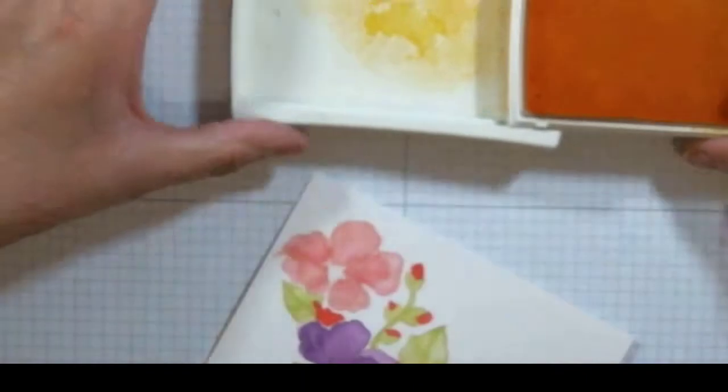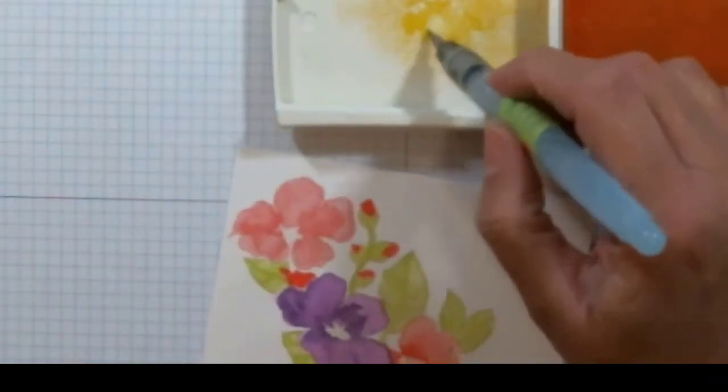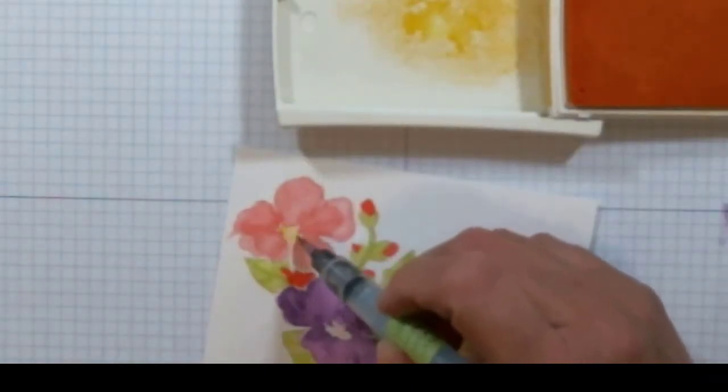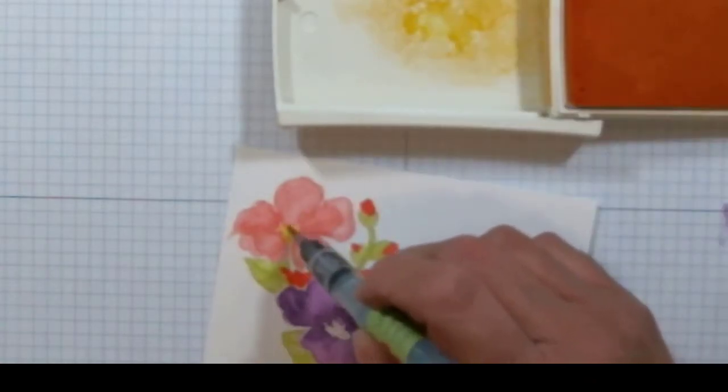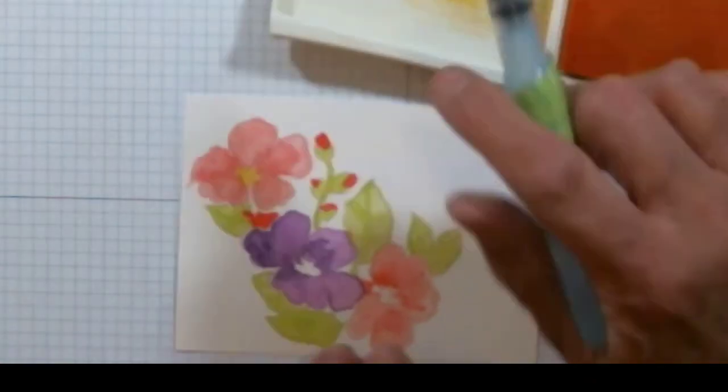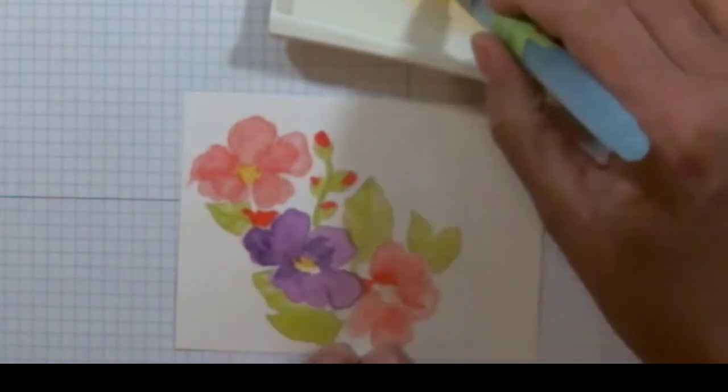To finish up the flower, I used Daffodil Delight and then I just added the centers of the flowers. I kind of did more of a solid look here, just making it dark. I just wanted a more solid look.